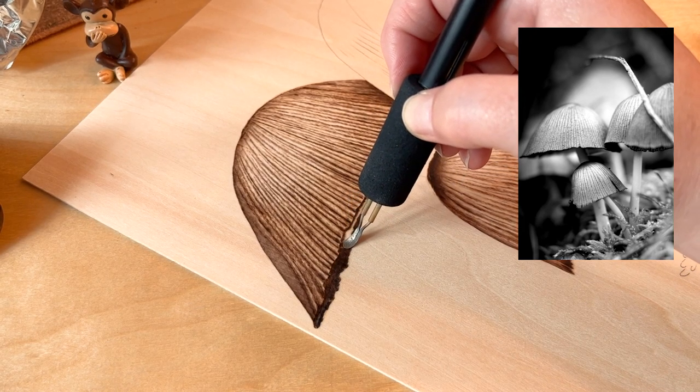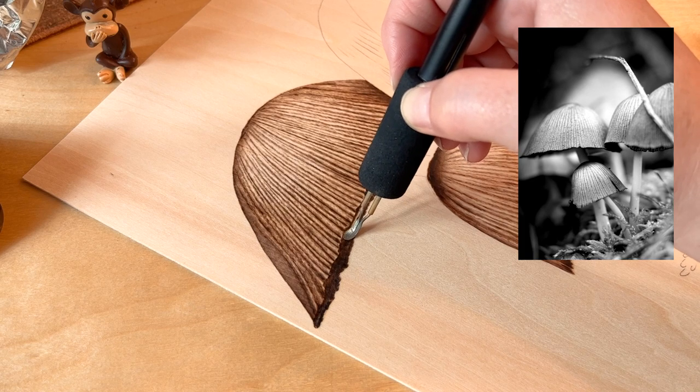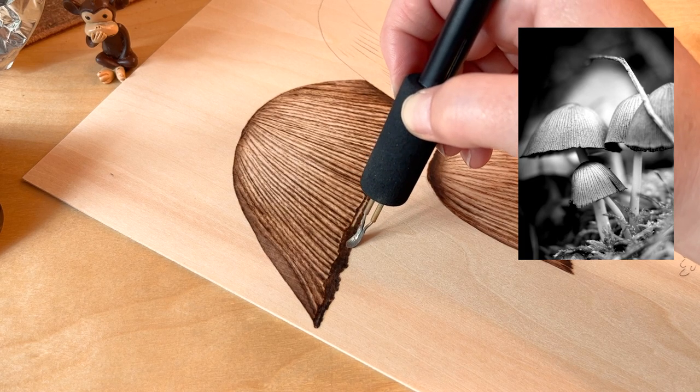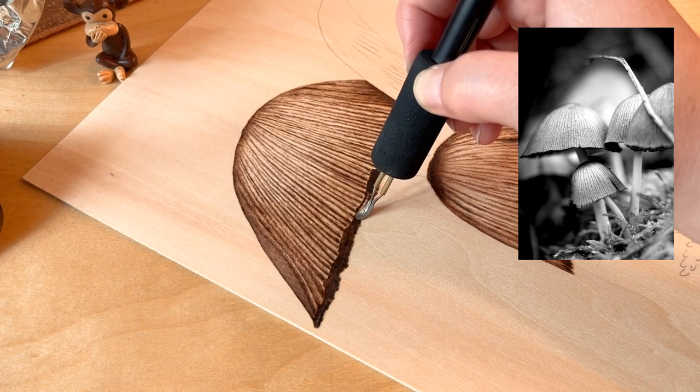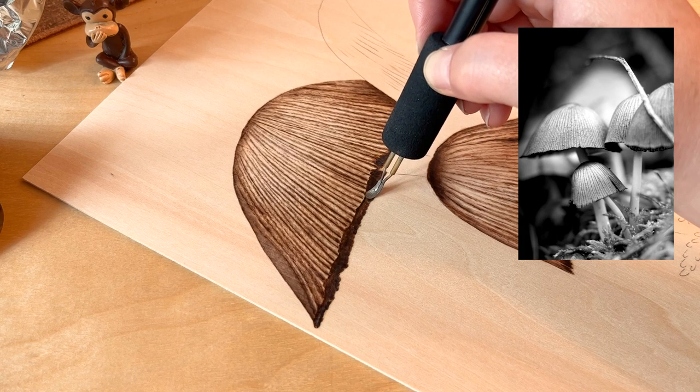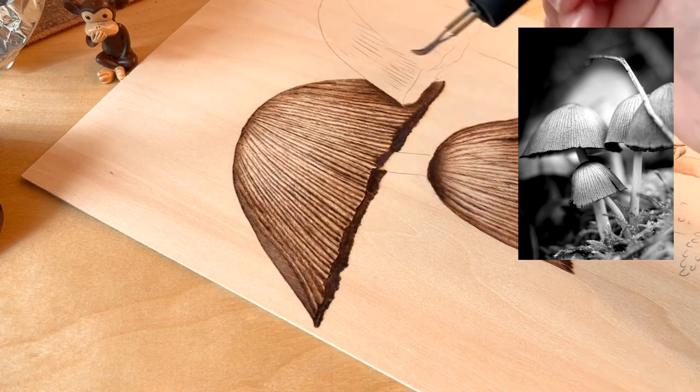You want a really dark brown or black burn under here because it's a really deep shadow. So I'm going to burn that whole thing dark, and then I'm going to add these sort of shaded bits to the edge of the front mushroom.